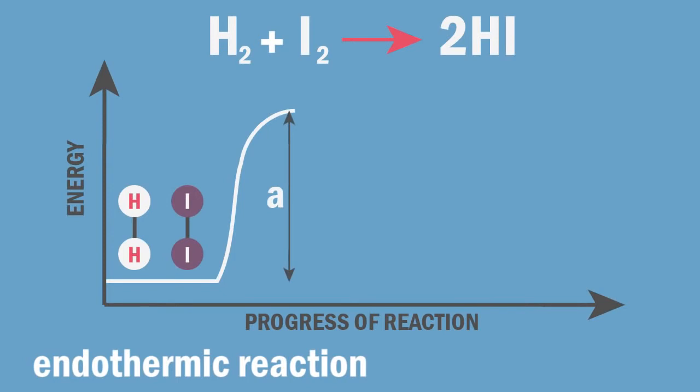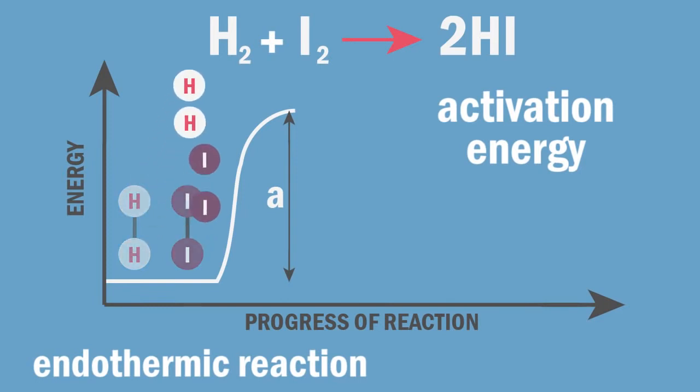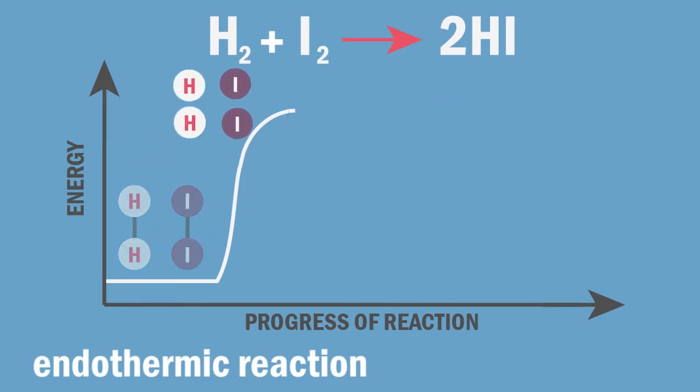A is the activation energy which is the energy taken in to break the H-H and the I-I bonds in the reactants. C is the energy given out when the new H-I bonds make to form the products.